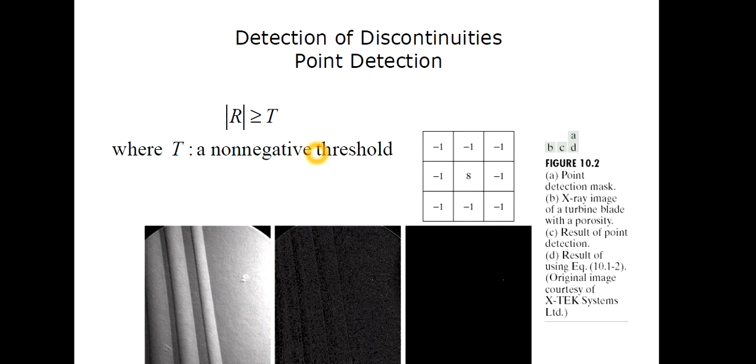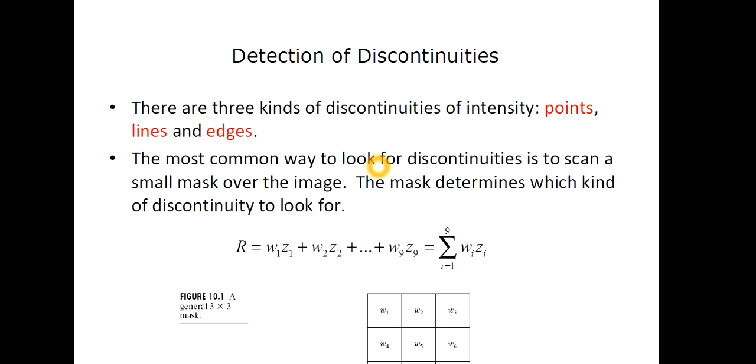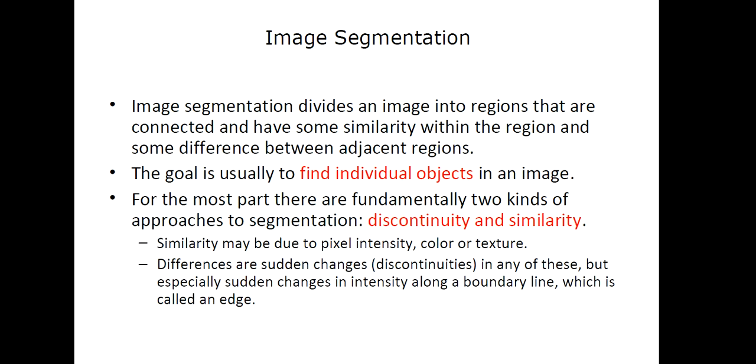Don't worry, I will discuss the threshold-based segmentation in details. But for this lecture, this is sufficient for you that we have three kinds of discontinuities in image: point, lines, and edges. And we have two different approaches for image segmentation: discontinuity-based and similarity-based. And we perform segmentation to find individual objects in an image. So that's all for this lecture.